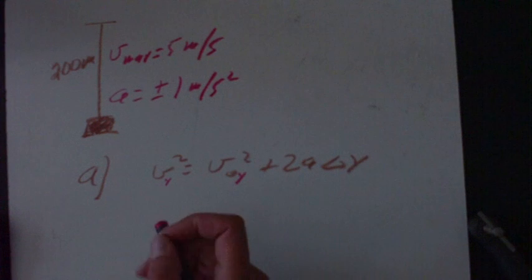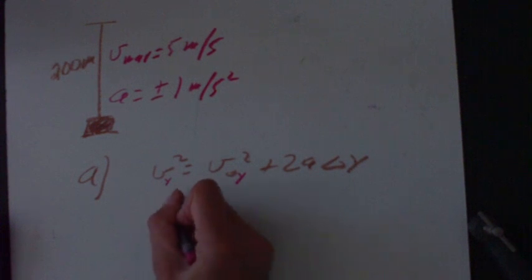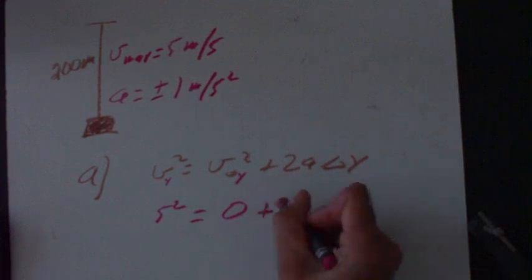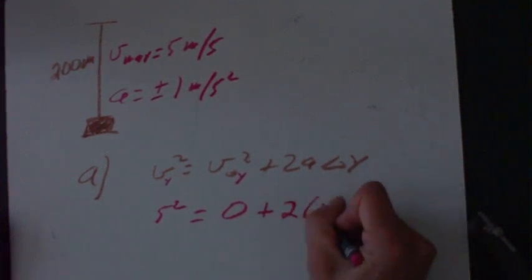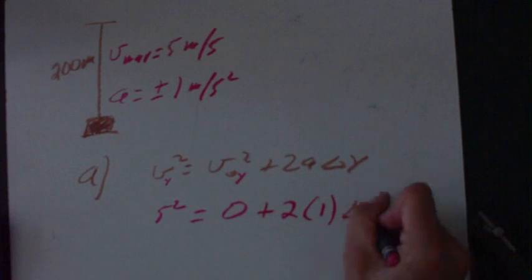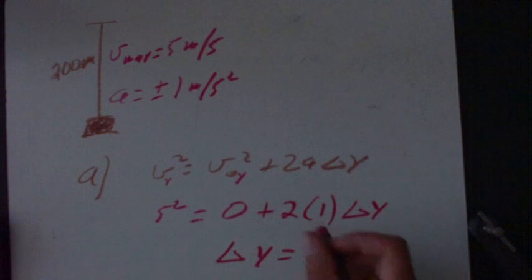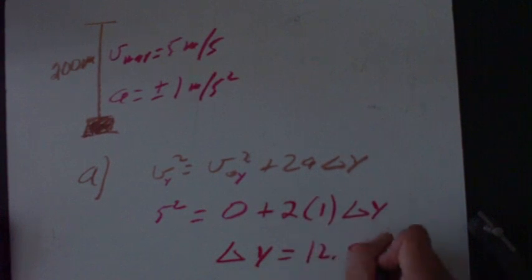In particular, the final speed that we're after is the five and it's squared. The elevator starts at rest, so that'll be a zero, and then we'll have the plus two, and the a is always going to be one in this case, and then we'll have a delta y. So if I go ahead and work this, I can solve for delta y to get 12.5 meters.